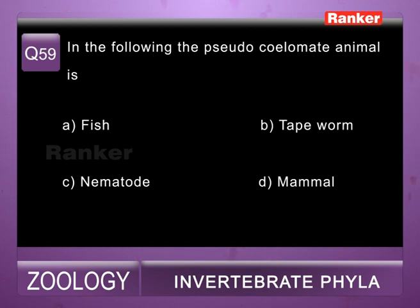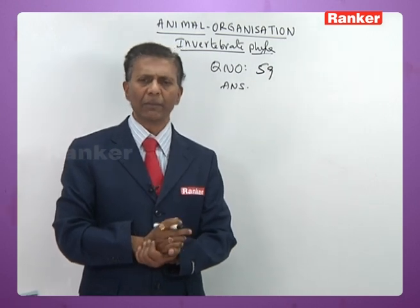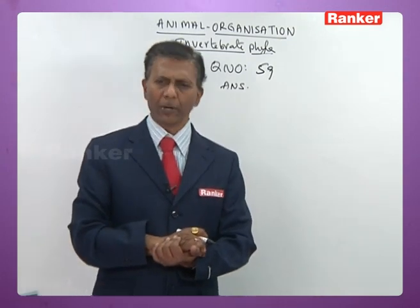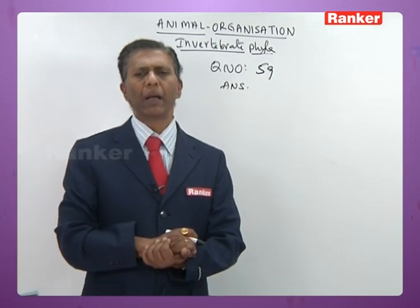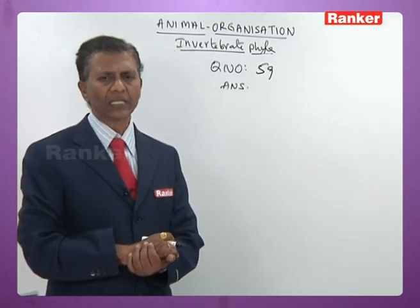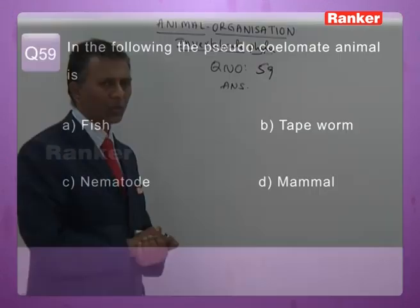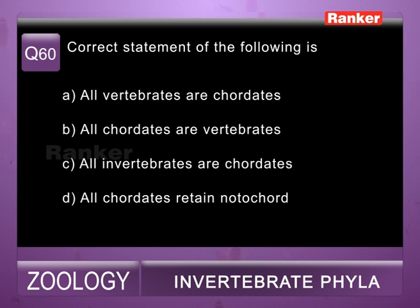Question fifty-nine: the pseudocoelomate animal is — a) fish (bilaterally symmetrical), b) tapeworm (acoelomate), c) nematode (pseudocoelomate), d) mammal (bilaterally symmetrical, schizocoelomateate). So fifty-ninth question correct answer is c) nematode.